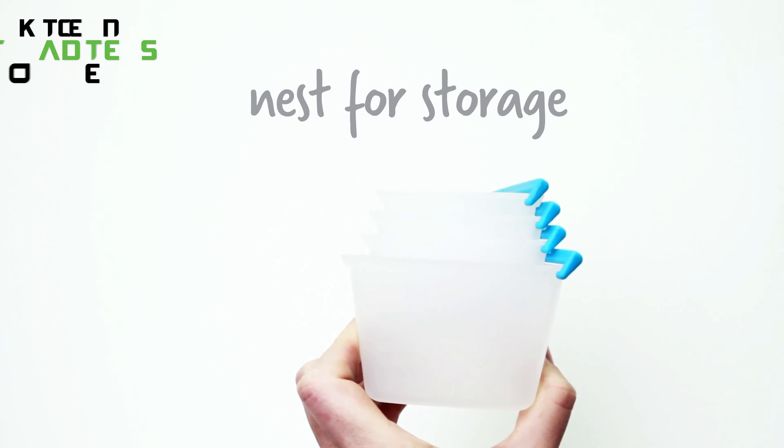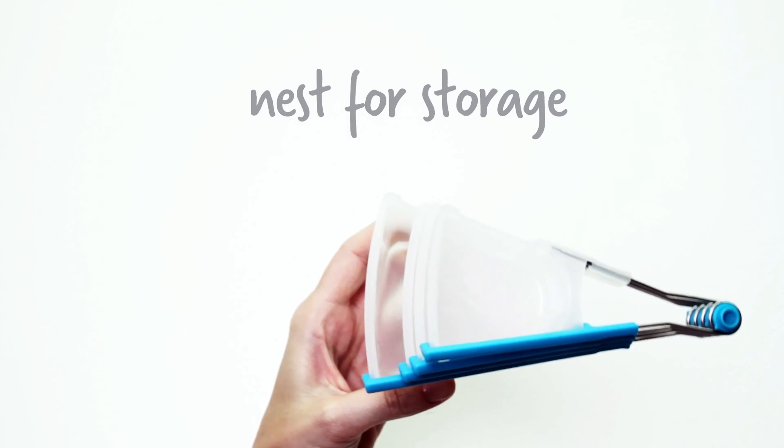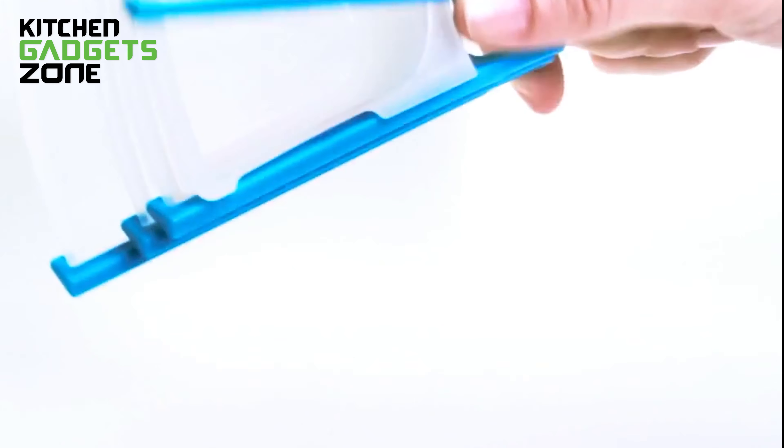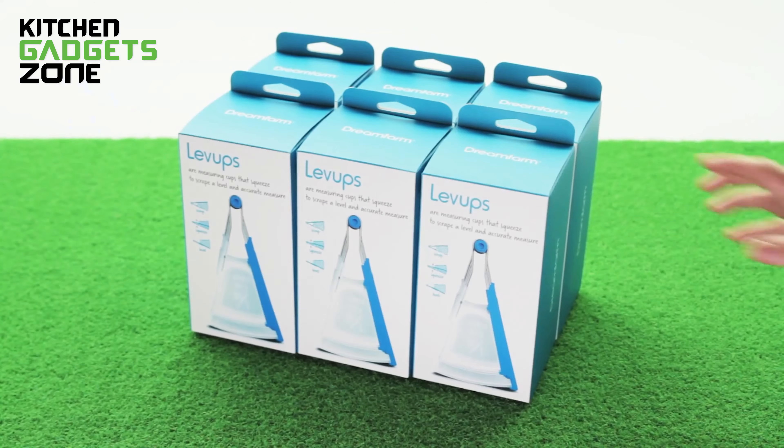Leave-ups come in a set of four that snap together for space-saving nested storage, yet easily pull apart when you need them. The transparent cups with red markings ensure you can always see exactly what you're measuring, no matter the ingredient.